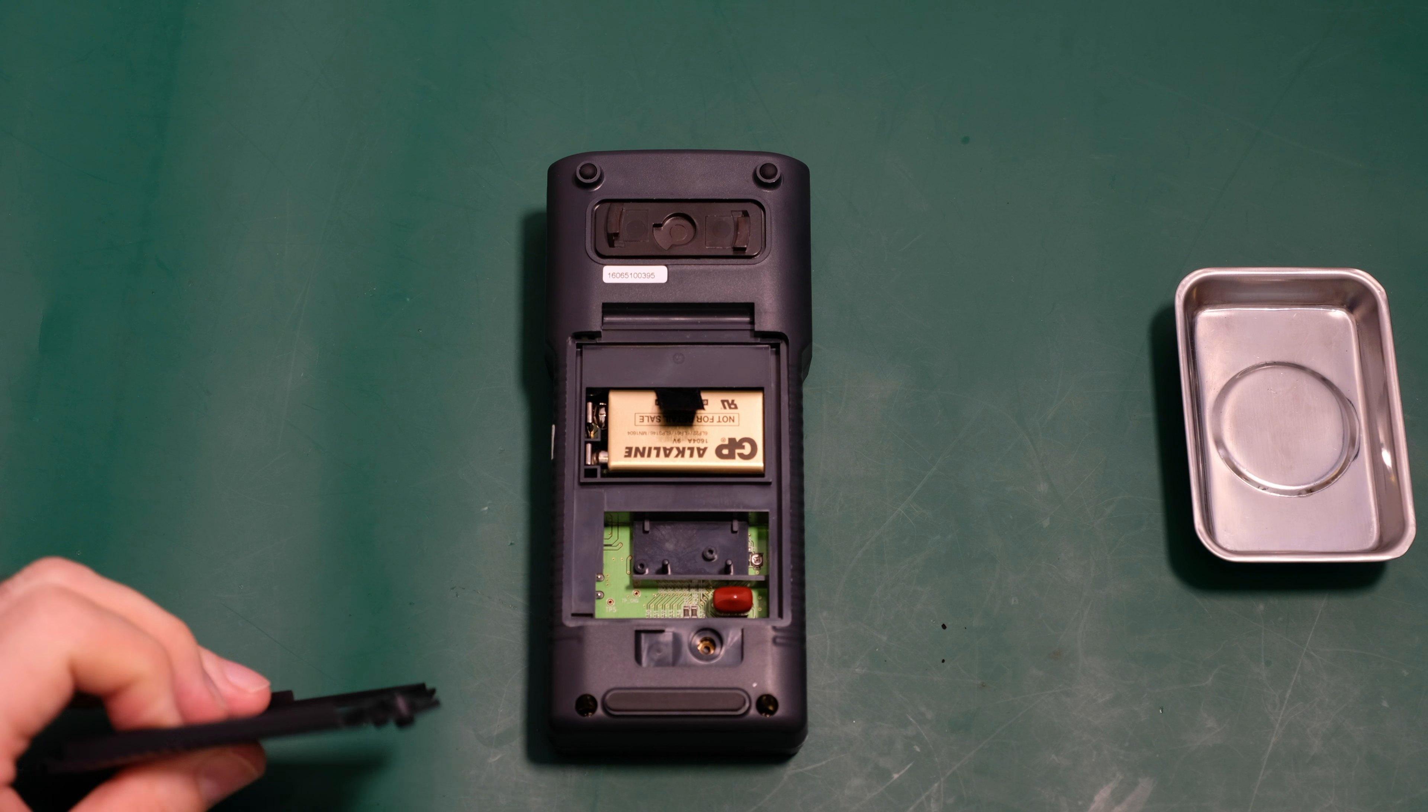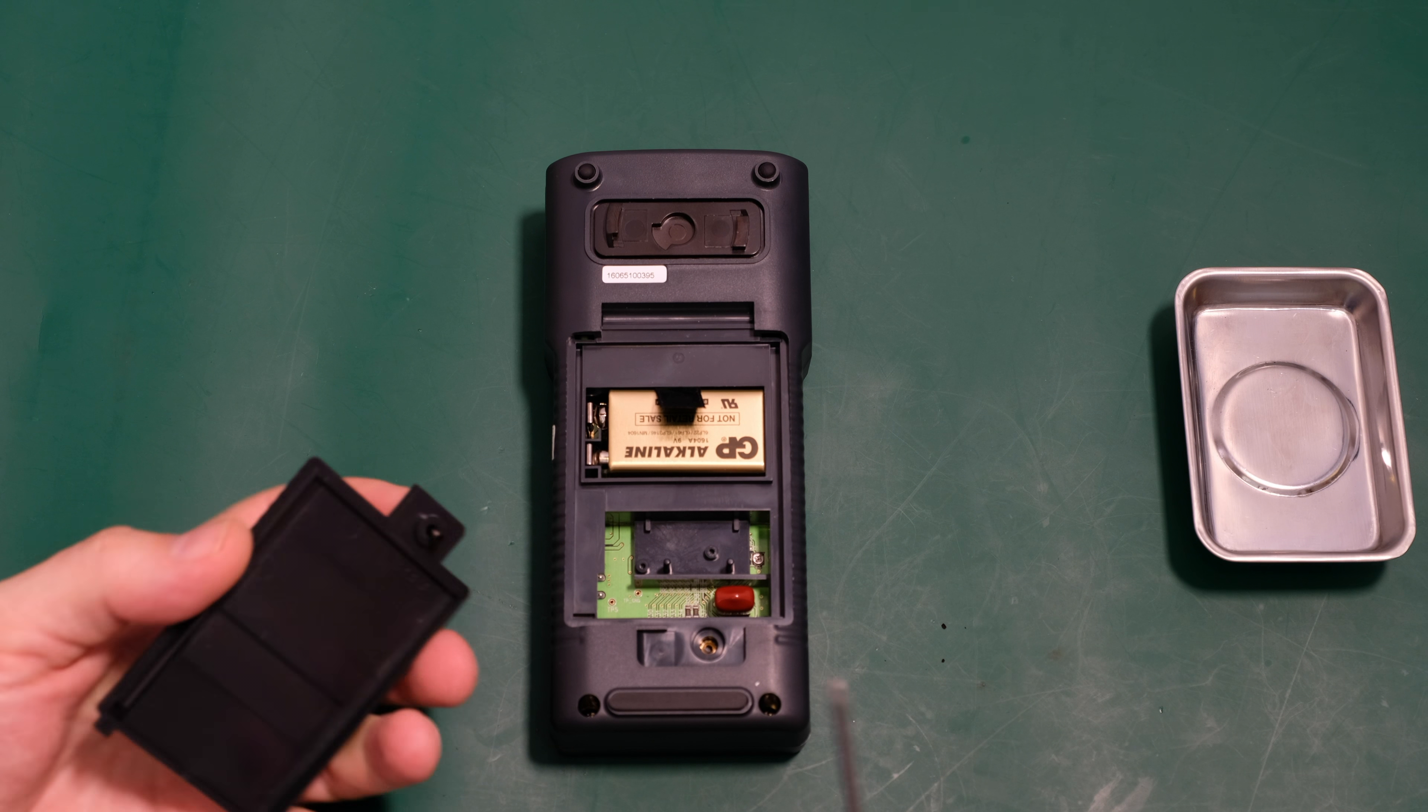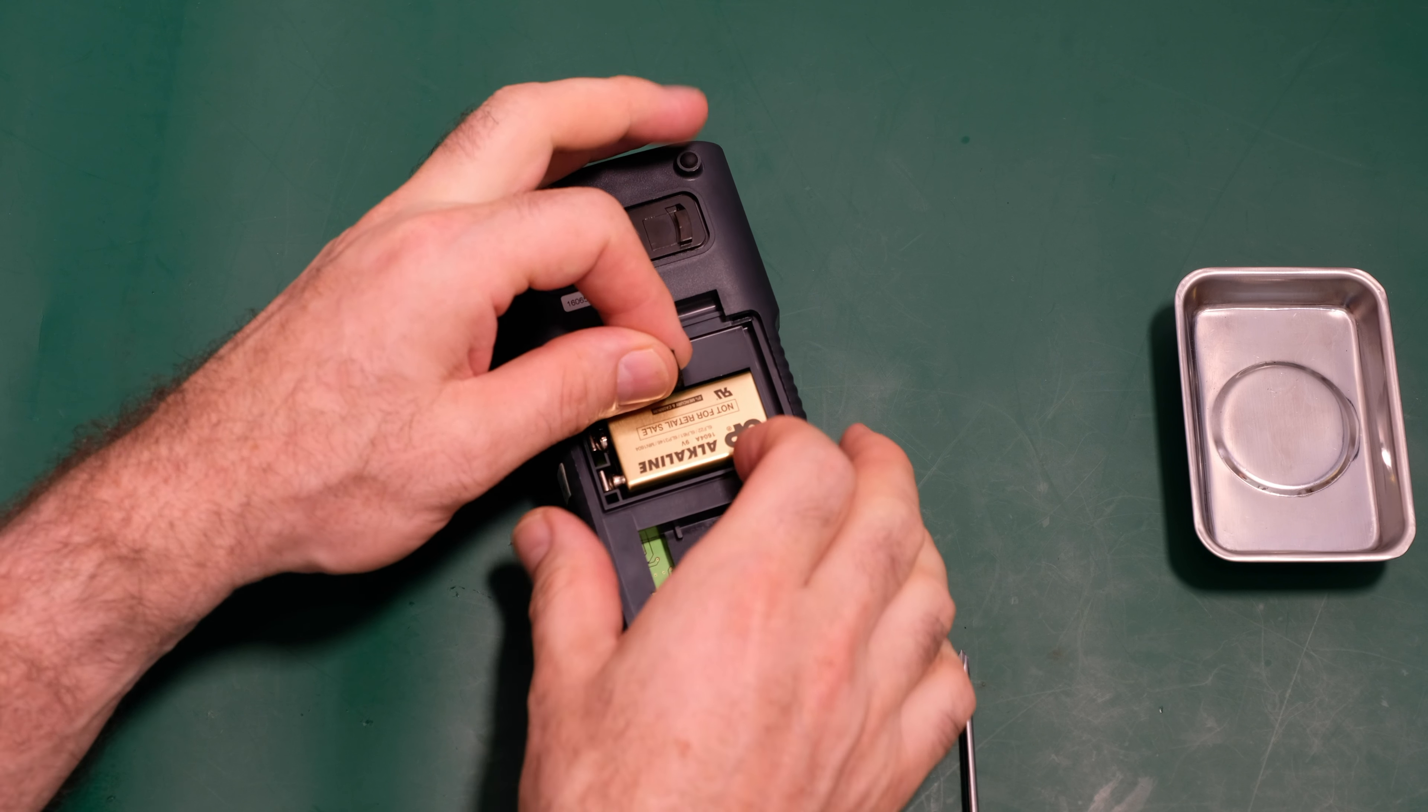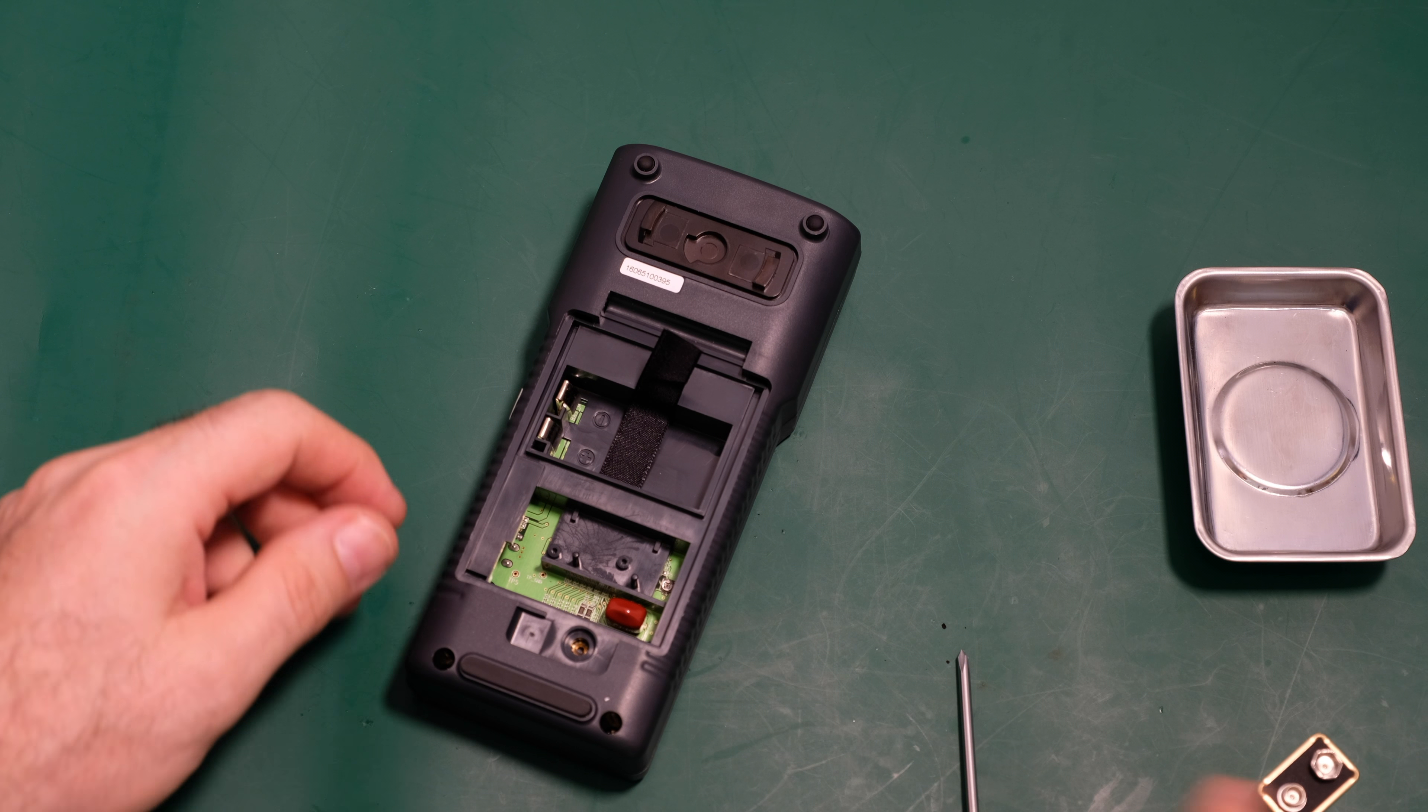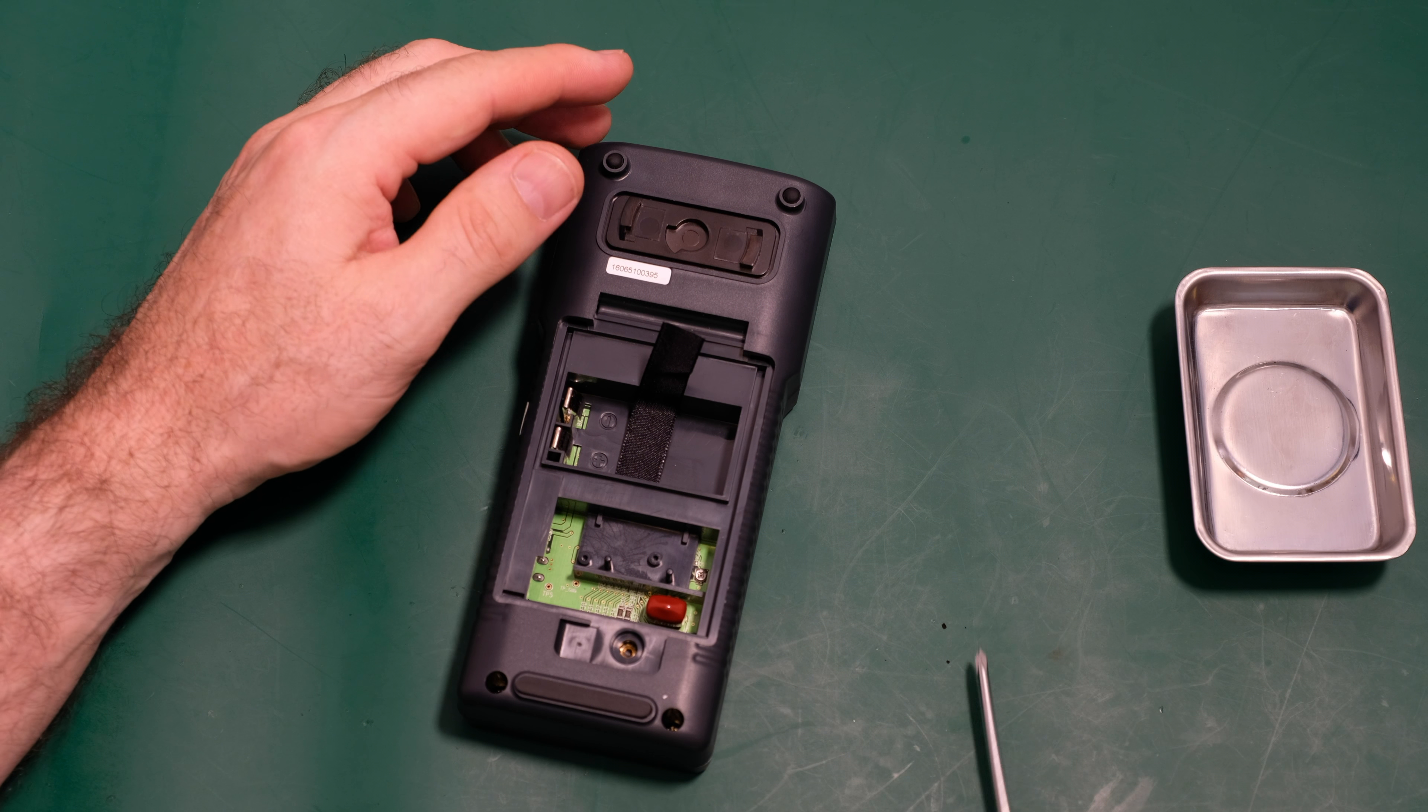So we do have a proper threaded screw here going into proper metal inserts, not self-tap, which is good because of course this is just the battery cover so you would be expecting to be taking this off regularly. This is just the cheap, nasty battery it came with. This will be changed. These alkalines are not the best.